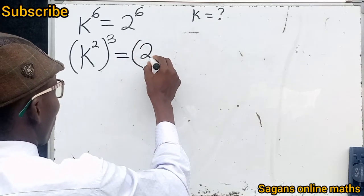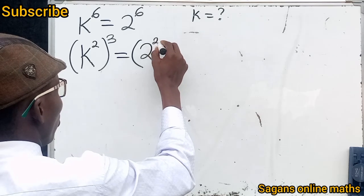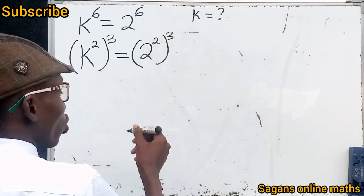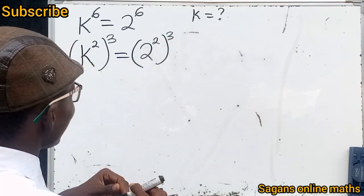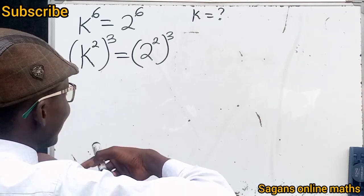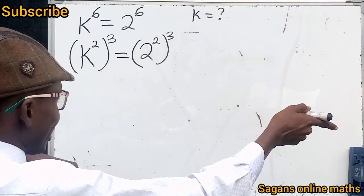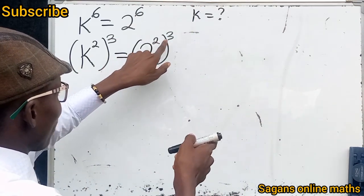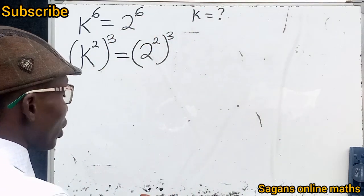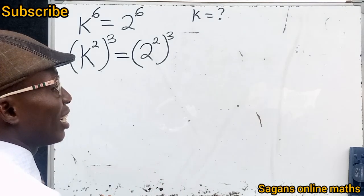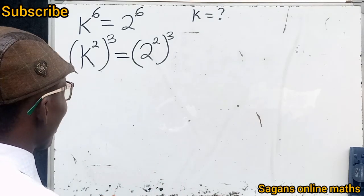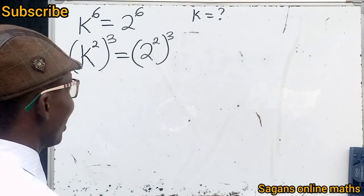Similarly, I'm not wrong if I write 2 raised to the power of 4/6 as 2 squared, raised to the power of 3, because the index inside the parentheses can multiply the index outside — 2 multiplied by 3 gives 6. Now let me equate the bases since the powers are the same.